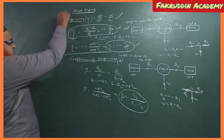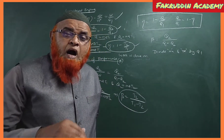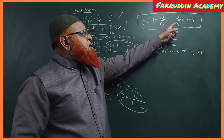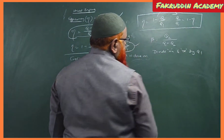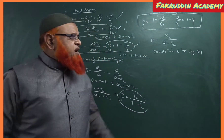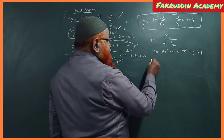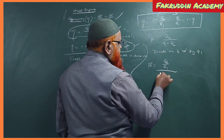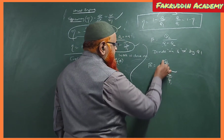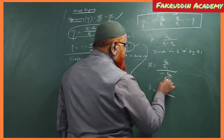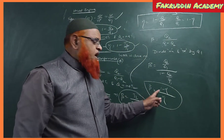Now let us find the relation between efficiency η and coefficient of performance β. We know η = 1 − Q2/Q1, so Q2/Q1 = 1 − η. We also know β = Q2 / (Q1 − Q2). Dividing numerator and denominator by Q1, we get β = (Q2/Q1) / (1 − Q2/Q1) = (1 − η) / η. This is the relation between β and η.